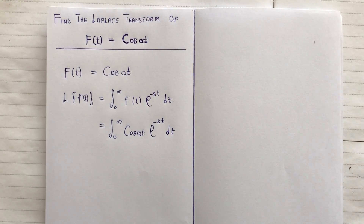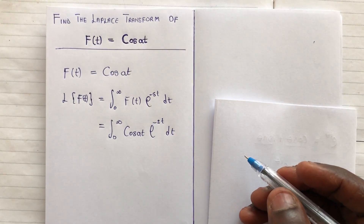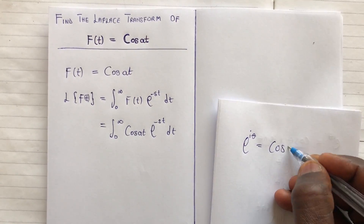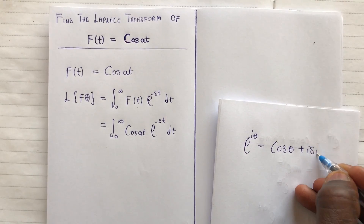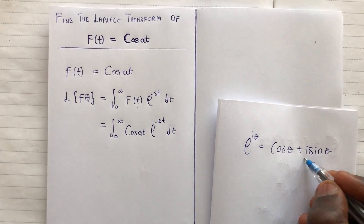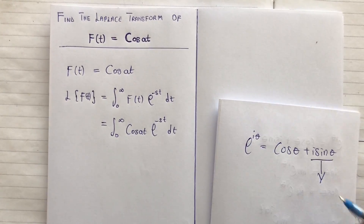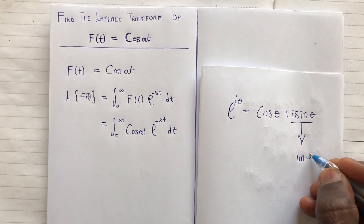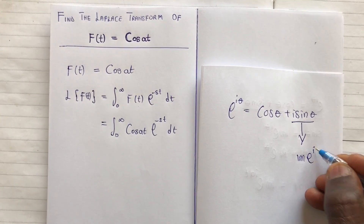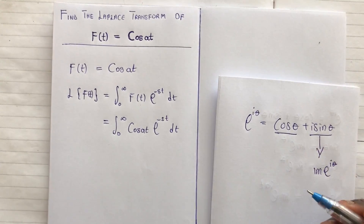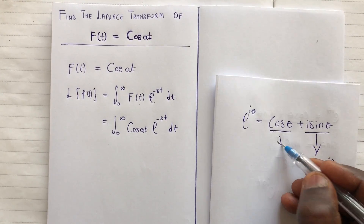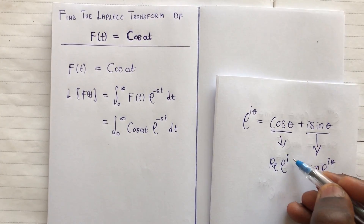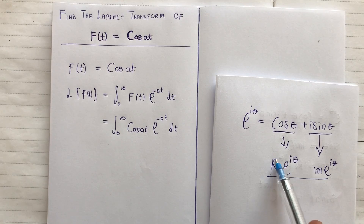We know from Euler's formula that e to the power i·theta equals cos(theta) plus i·sin(theta). The imaginary part is i·sin(theta), which is Im{e^(i·theta)}, and the real part cos(theta) is Re{e^(i·theta)}.